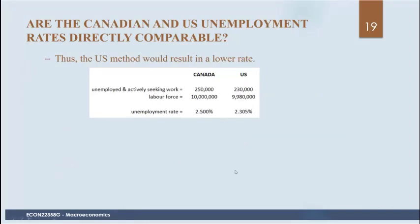For example, if there are 20,000 people included in Canada's labor force but not in the US labor force, and we subtract 20,000 from both the numerator and denominator, you can see that the unemployment rate will then be lower. Just by having a stricter definition of what constitutes actively seeking work, you can get a lower unemployment rate. This is one of the reasons the US unemployment rate tends to be a bit lower than Canada's.